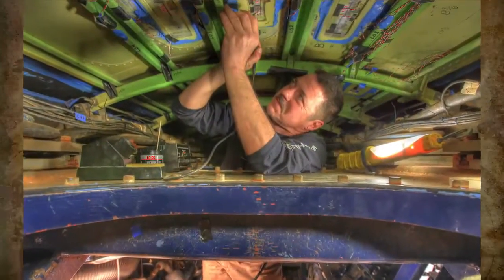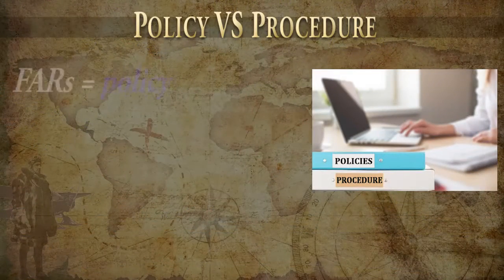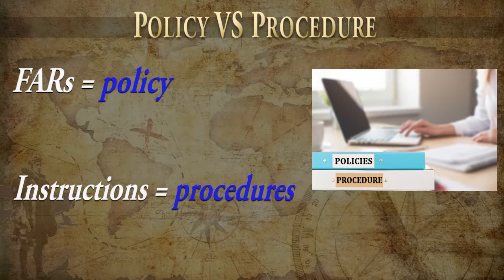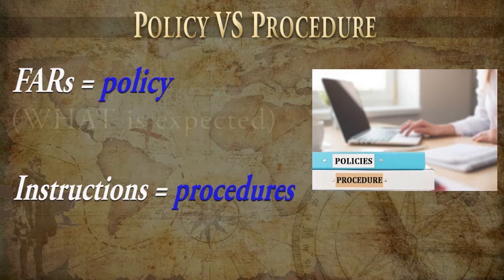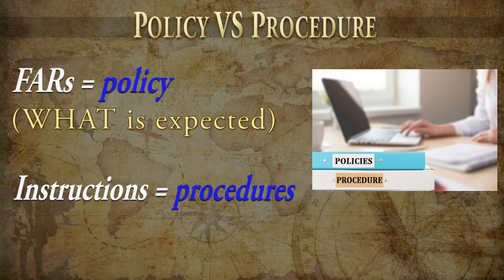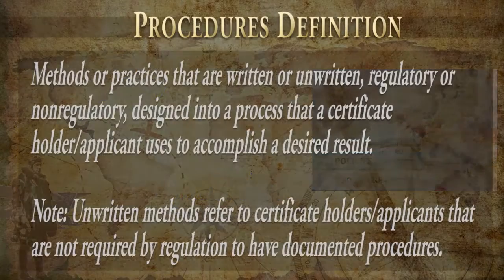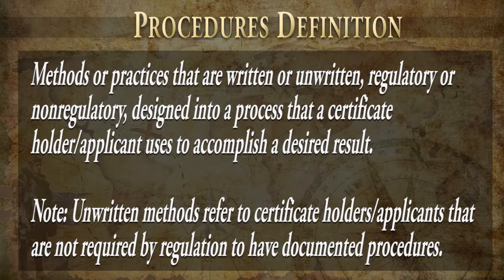Procedures may be written or unwritten depending on regulatory requirements and the complexity of the certificate holder. There's also a difference between policy and procedures. During surveillance we may find more policy than procedures. Procedures tell you how something is accomplished, while policy is what the certificate holder expects as the desired result. It's easy to confuse the two — for example, regulations are often stated as policy. The regulations don't tell you how the certificate holder should complete a task or process, and there's often more than one way to meet the intent of a rule.